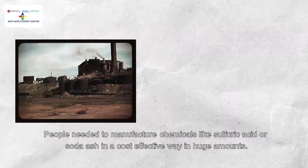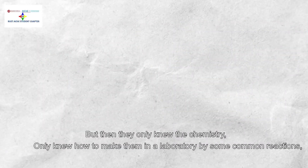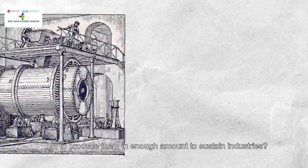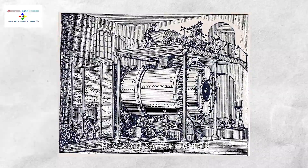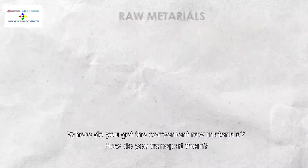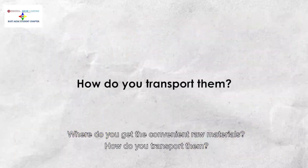People needed to manufacture chemicals like sulfuric acid or soda ash in a cost-effective way and in huge amounts. But they only knew the chemistry — they only knew how to make them in a laboratory by common reactions. To produce them in enough quantities to sustain industries, how do you even do that? How do you get the convenient raw materials? How do you transport them?